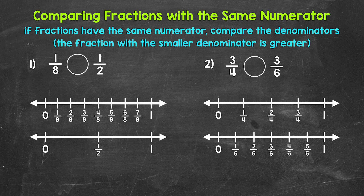Let's jump into number one, where we have one eighth and one half. So reading this from left to right, we have: is one eighth greater than, less than, or equal to one half? If we have fractions with the same numerator, all we have to do is compare the denominators. The fraction with the smaller denominator is greater. Now here, we're going to use number lines to help us visualize this.